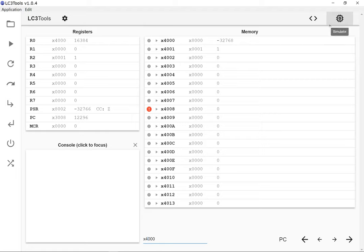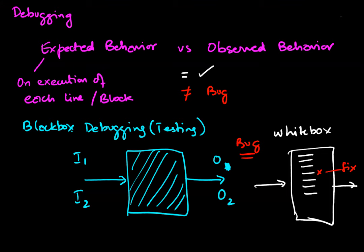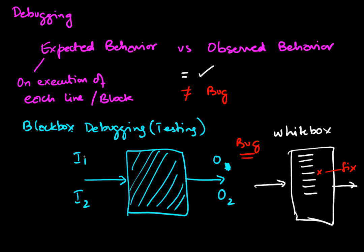To recap: in debugging we start by treating our code as a black box. If everything checks out, we're done. If there's a mismatch between expected and observed behavior, we do white box testing — single-stepping one instruction at a time, finding the bug, fixing it, and running again. We can switch back and forth between black box and white box testing as needed. That's the end.